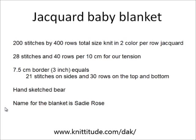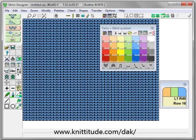Now that we've worked out the strategy, let's discuss the body of the pattern. We are going to have a 400 row blanket minus the 30 rows on each end, which equals 340 rows available for the design. 21 stitches on each side of the border gives me 168 stitches wide for the design. Let's go into designing it now.